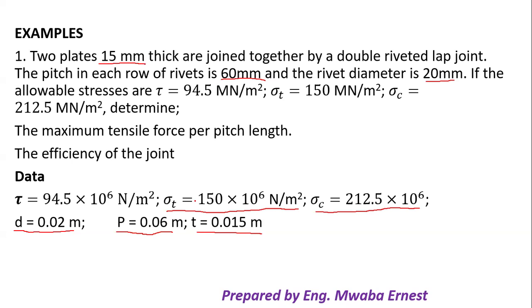For the maximum tensile force per pitch length, first we find the resistance against tearing of the plate. The tearing force Rt = (p − d) × t × tearing stress = (0.06 − 0.02) × 0.015 × 150 × 10⁶. From this calculation we get 90,000 N.